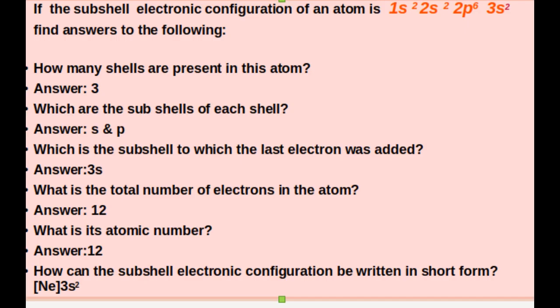The subshell electronic configuration of an atom is 1S2, 2S2, 2P6, 3S2. Find the answers to the following. How many shells are there in this atom? The last subshell is 3S2, so 3 shells are present.